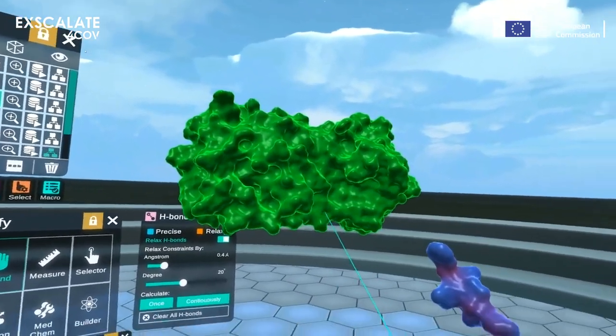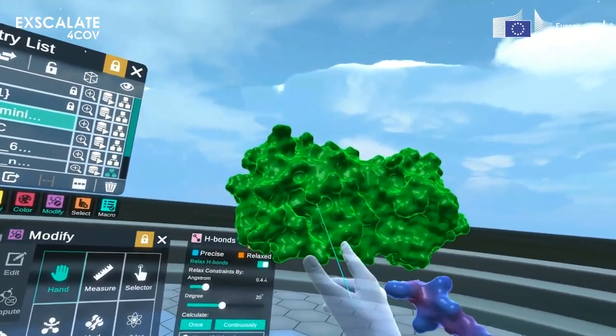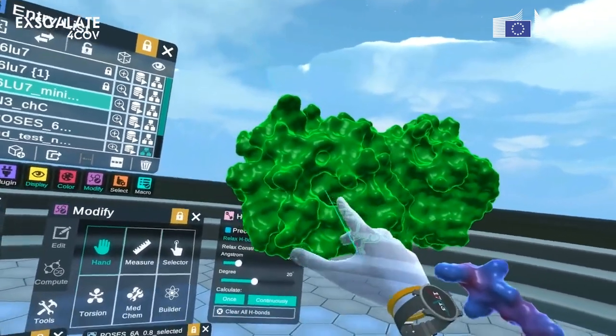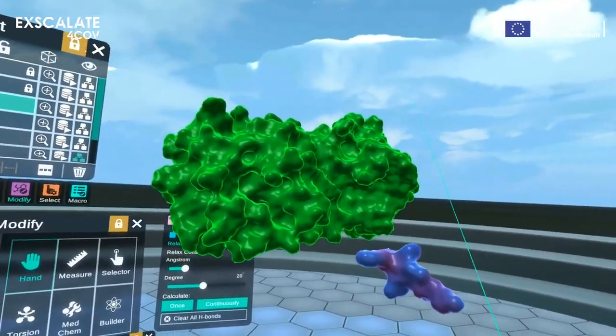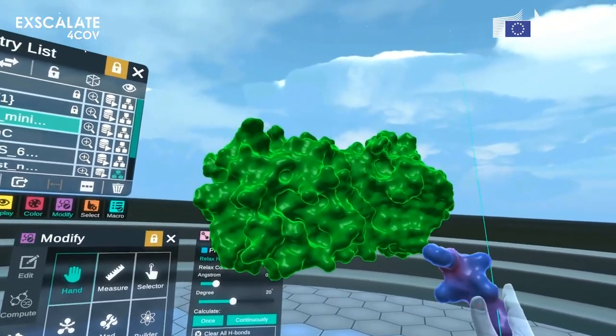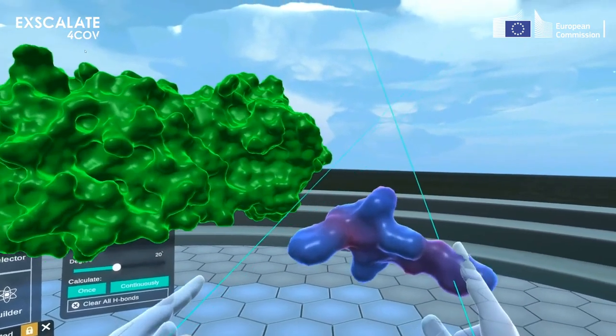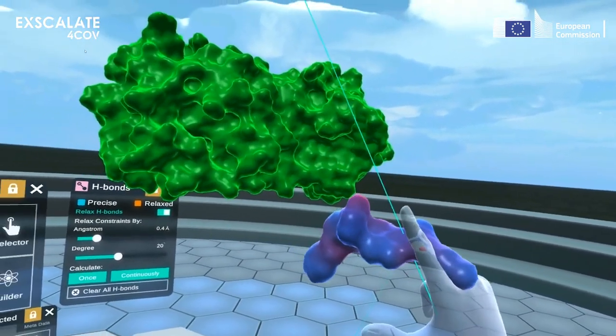Thanks to the presence of these structures, we can identify the so-called binding site—in other words, an area of the protein which may be targeted using new drugs. In this case, as you can see, the molecule indicated in blue is a ligand with the capability to interact with this part of the protein and impede its activity.